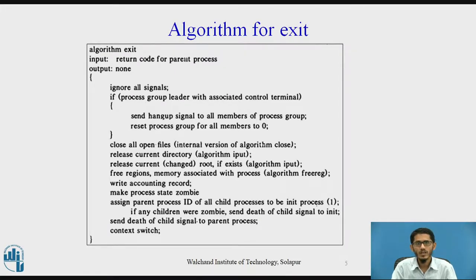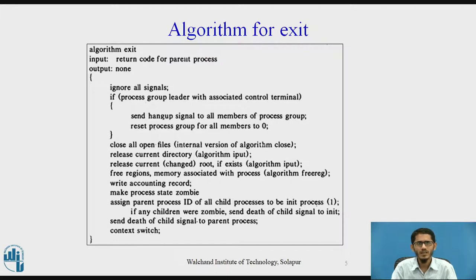Now let us see the algorithm for the exit system call. The input to this is the return code for the parent process. The kernel first disables signal handling for the process, as it no longer makes sense to handle signals. If the exiting process is a process group leader associated with a control terminal, the kernel assumes the user is not doing any useful work and sends a hangup signal to all the processes in the process group.